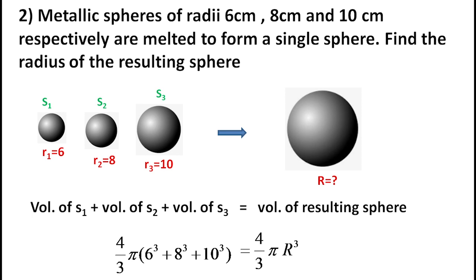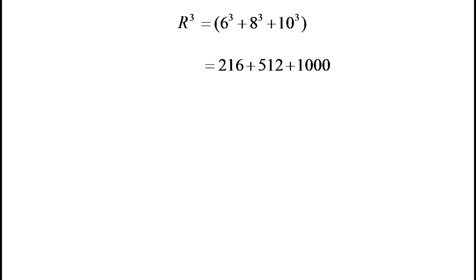We simplify: 4/3 and 4/3 cancel, π and π cancel. Then R³ = 6³ + 8³ + 10³, which gives R³ = 216 + 512 + 1000 = 1728. Taking the cube root, R = 12 cm.